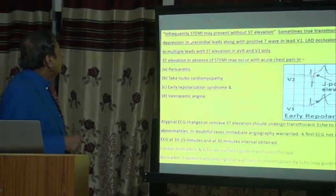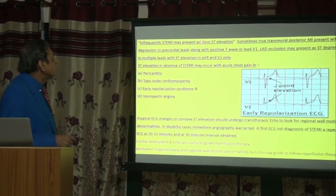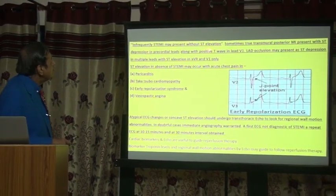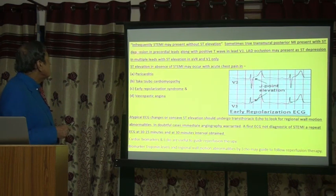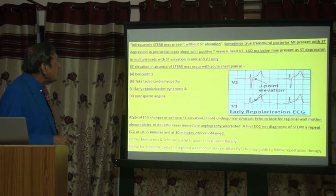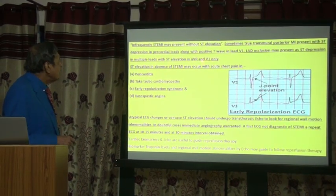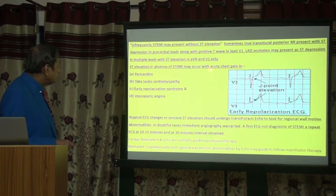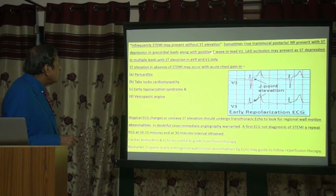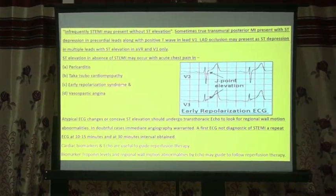Infrequently — and this is a very important point — STEMI may present without ST elevation. Sometimes transmural posterior MI presents with ST depression in precordial leads along with a positive T wave in lead V1. Left main occlusion may present as ST depression in multiple leads with ST elevation in AVR and V1 only. ST elevation in the absence of STEMI may also occur with active chest pain in pericarditis, Takotsubo cardiomyopathy, early repolarization syndrome, and vasospasm.